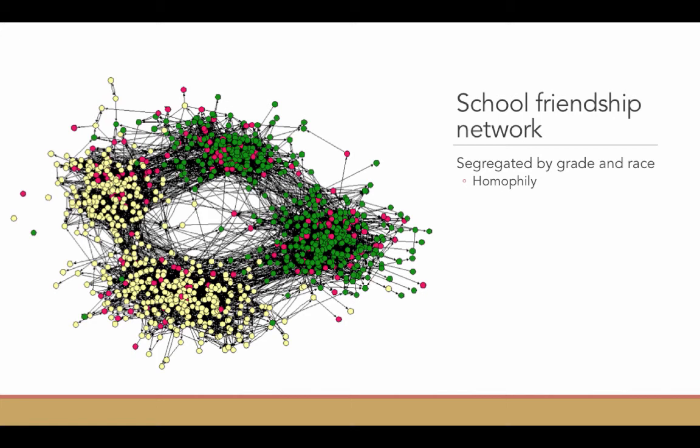What this network shows us, first of all, is this tendency towards what's called homophily. Homophily means that we tend to associate with people who are a lot like us, whether that means by race, by age, by social class. We tend to form relationships with people who are like us. The more we do that, the more homophilous our networks are.